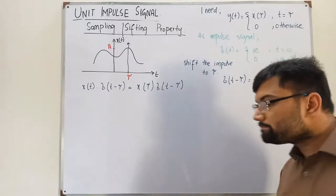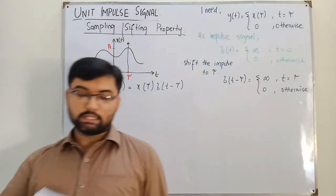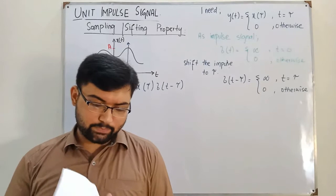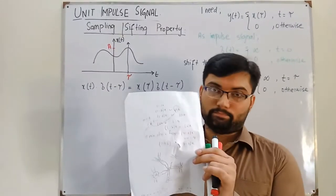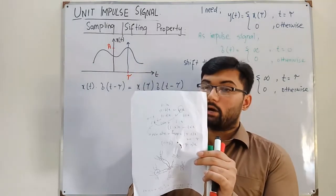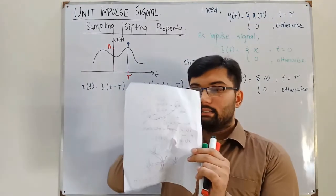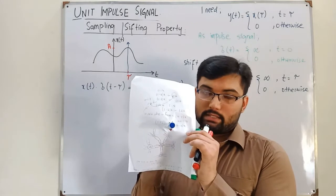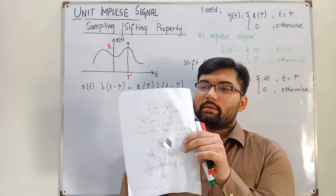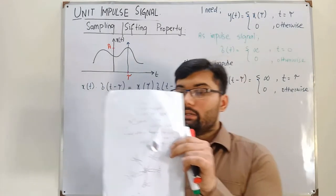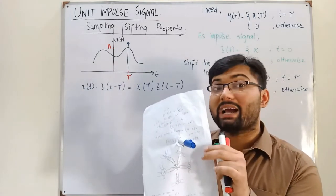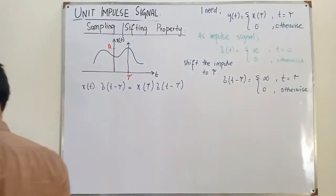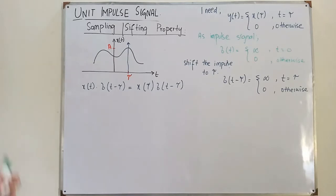If you have any confusion you can ask. As an example: if I have a page representing x of t and a hole in the page at t equals tau — the marker is like an impulse signal. The marker can only enter through that hole, so it can only reach x of tau, not any other value of x of t, because the impulse is zero everywhere else.